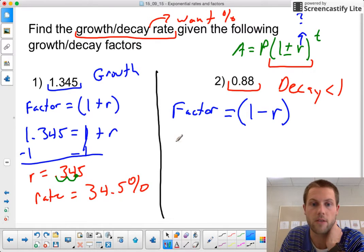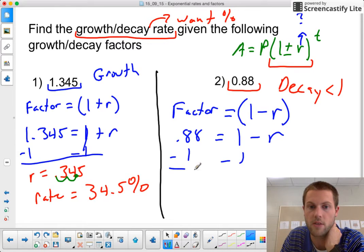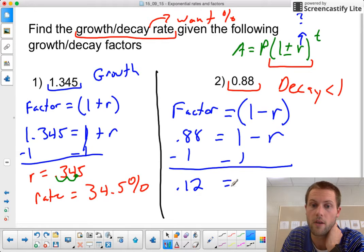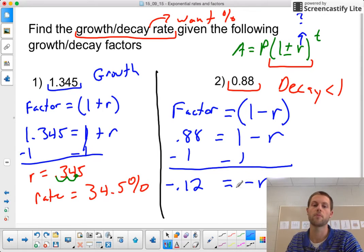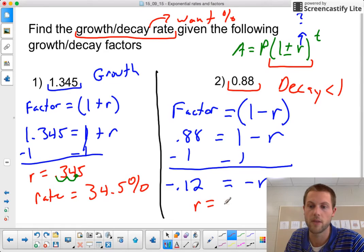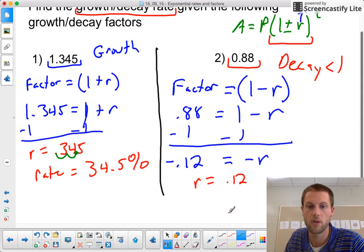So my factor is 0.88 and that's going to equal 1 minus r. If I subtract 1 again from both sides of this equation, I'm coming out with -0.12 equals -r. I can flip both sides by multiplying everything by -1, and my rate, my decay rate, is going to end up being 0.12.